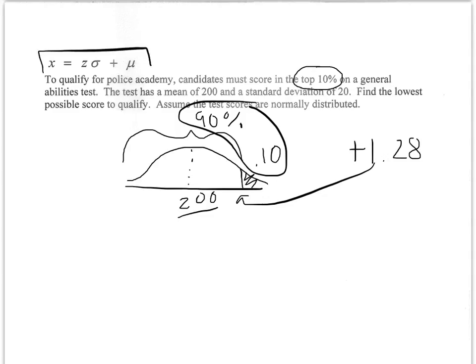Well, look at this formula up here. We're missing the x value, we're missing the actual score. X equals, I put my z-score in, positive 1.28, I put my standard deviation in, I put my mean in.